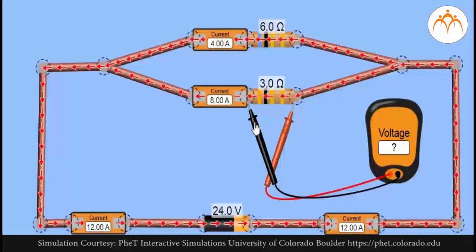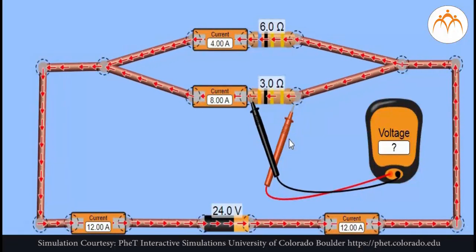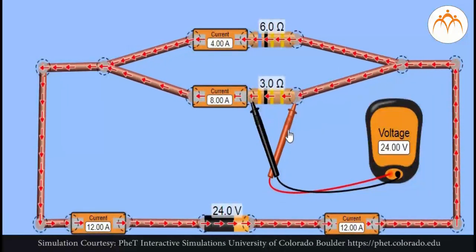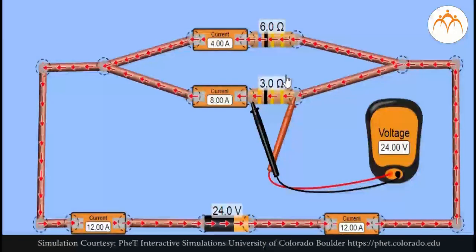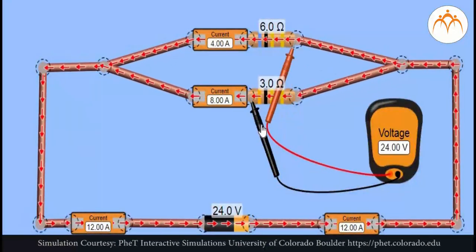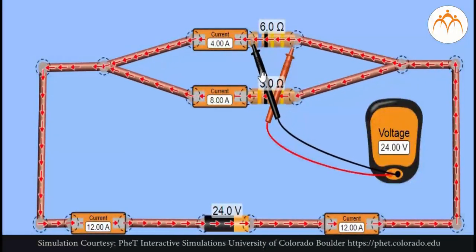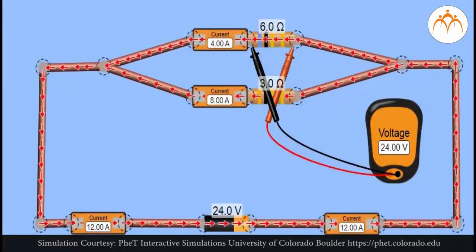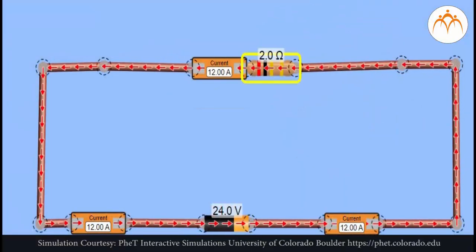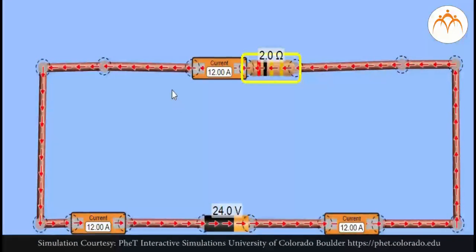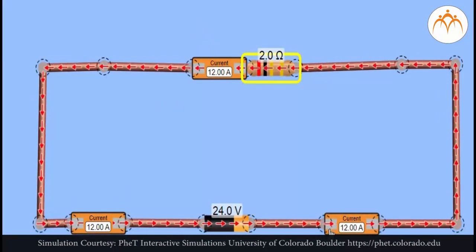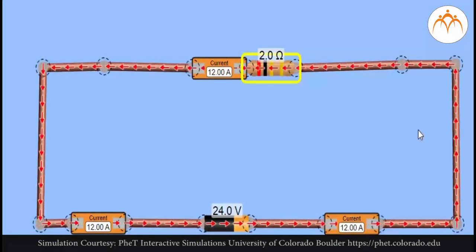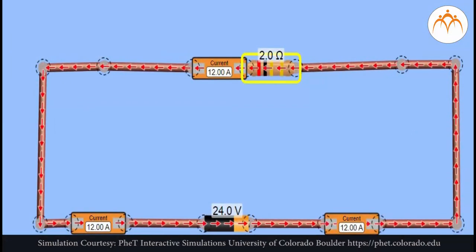Nonetheless, when taken as a whole, the total amount of current in all the branches when added together is the same as the amount of current at locations outside the branches. The rule that current everywhere is the same still works, only with a twist. The current outside the branches is the same as the sum of the currents in the individual branches — it is still the same amount of current, only split up into more than one pathway.